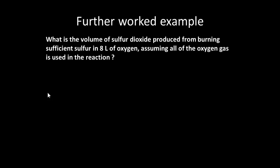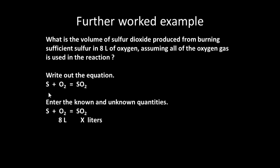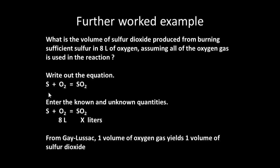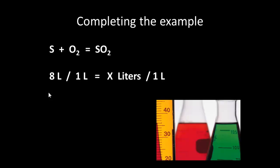What volume of sulfur dioxide would you get from burning sulfur in 8 liters of oxygen? Assume that all the oxygen gas is used — what volume of sulfur dioxide do we get? Write out the equation: S plus O₂ gives SO₂. The known quantity is 8 liters of oxygen, and the unknown quantity is x liters of sulfur dioxide. From Gay-Lussac's law, one volume of oxygen gives one volume of sulfur dioxide, so 8 over 1 equals x over 1, and x equals 8 liters.